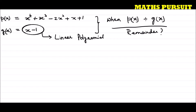Now what is the zero of g(x)? The zero of this polynomial means x minus 1 is equal to 0, which gives us x is equal to 1. So the zero of this linear polynomial is 1.